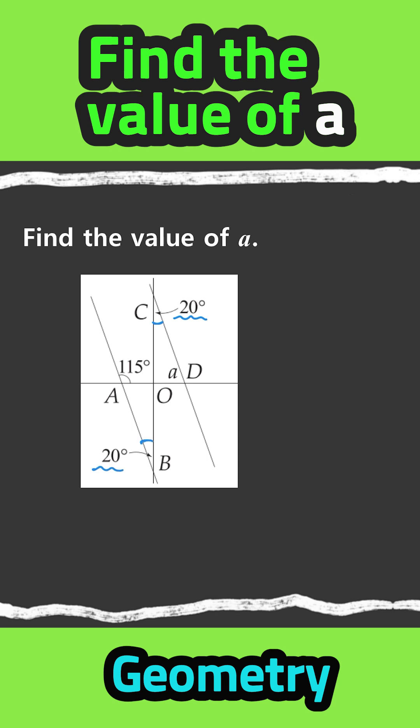They are same angles. If these two angles are same, we know that this line right here and this line right here, they are parallel, because these two angles are alternate interior angles.